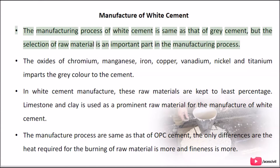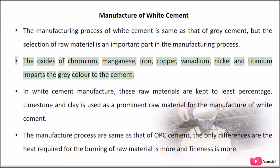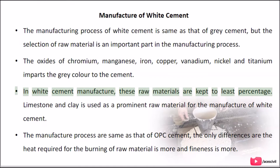The manufacturing process of white cement is the same as that of grey cement, but the selection of raw material is an important part in the manufacturing process. The oxides of chromium, manganese, iron, copper, vanadium, nickel and titanium impart the grey colour to the cement. In white cement manufacture, these raw materials are kept to the least percentage.